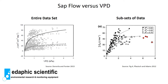A very common statistical technique seen in almost every sap flow paper is a correlation between sap flow and vapor pressure deficit (VPD). This graph, from Doralena and Forster, is a typical example: you have a scatter diagram with a logistic regression curve overlaid, showing three different eucalyptus species and the relationship between sap flow and VPD.